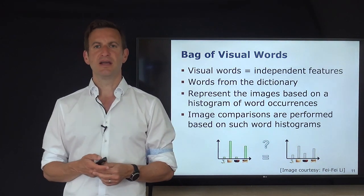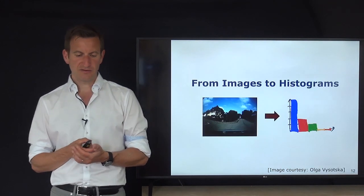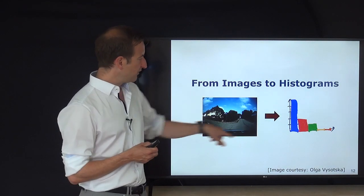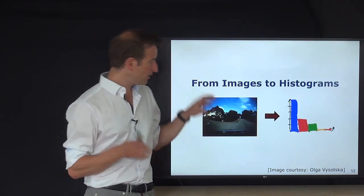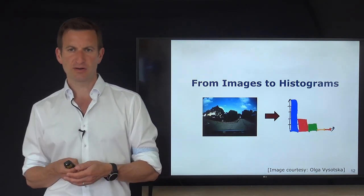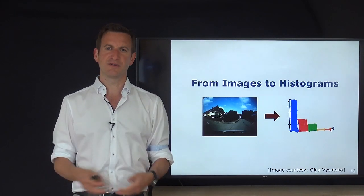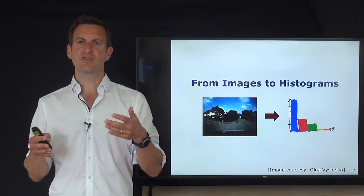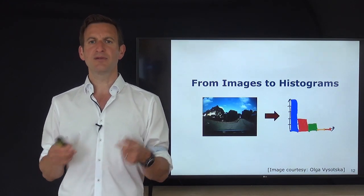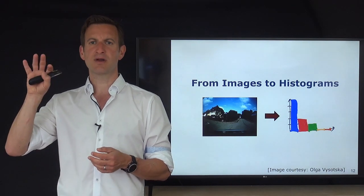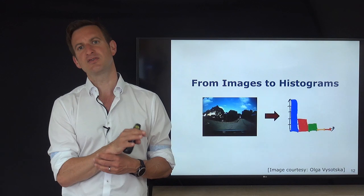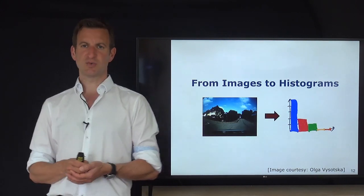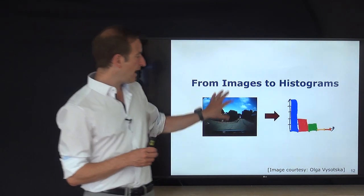Let's dive deeper. The first step is turning images into histograms of feature occurrences. Consider an image recorded from a car driving around for visual place recognition tasks. You drive through a city — in this example, Freiburg — taking images on different days and weather conditions. When you're there another time, you want to localize using a database of images: query your database for images similar to what you currently see, enabling place recognition.